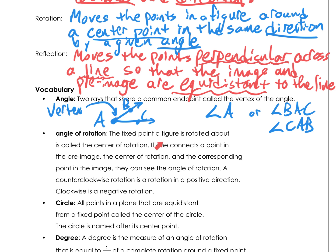The angle of rotation: if we have a fixed point that we're rotating around, the angle of rotation is the angle that the rotation moves. So if we have a point here and some object — let's call this A — and we rotate this a certain distance around the point, we'll get A prime. And that's our angle of rotation.